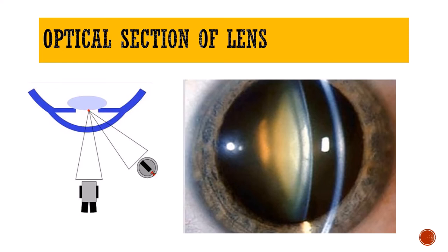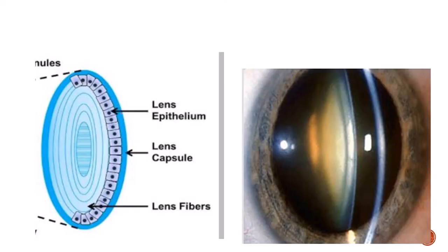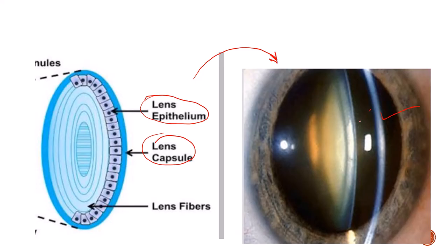Just as we have an optical section of the cornea, we also have an optical section of the lens. Here you move the joystick a little further forward toward the patient to focus light onto the surface of the lens. In the optical section of the lens you can see various lens layers. This is the optical section from the cornea, then the anterior chamber, and from here the lens begins. The anterior part of the lens, posterior part, lens capsule, lens epithelium, cortex, and nucleus are all visible.